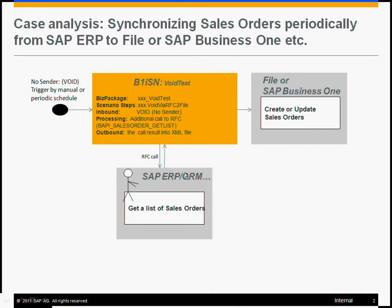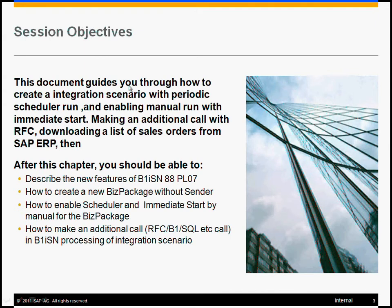We would like to create a scenario to synchronize sales orders periodically from SAP ERP or CRM to the file system or Business One, with an additional RFC call and without any sender trigger. After this session, you should be able to describe the new feature available in the latest B1ISM 8.8 patch, how to create a package without a sender using the vault sender system type, how to enable the scheduler setting and immediate start by menu, and how to make an additional call to RFC, B1, or BAPI inside the B1ISM processing.